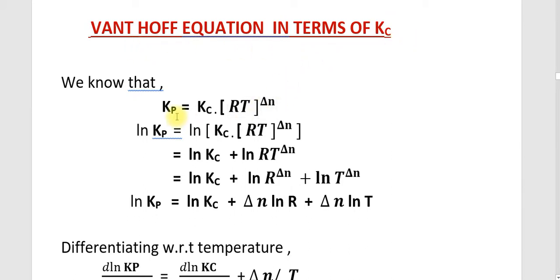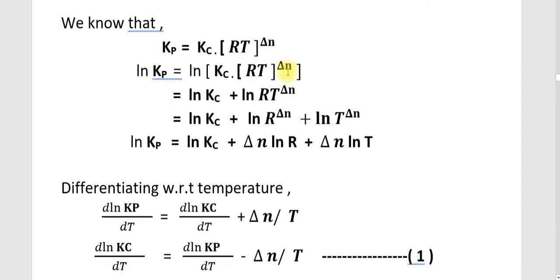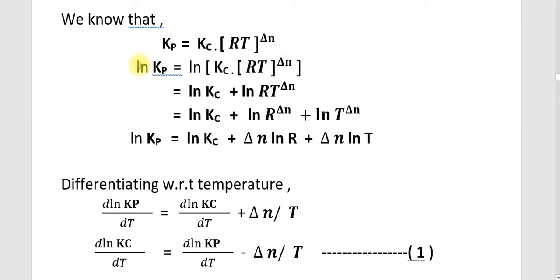For that, we are using the equation already discussed earlier. We know that Kp is equal to Kc into RT raised to delta N. We can take the natural log of this equation. Taking the log: Ln Kp is equal to Ln of Kc into RT raised to delta N. Using the log property — log of A times B equals log A plus log B — we get Ln Kc plus Ln(RT raised to delta N).